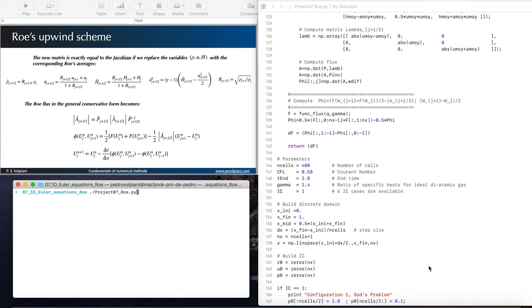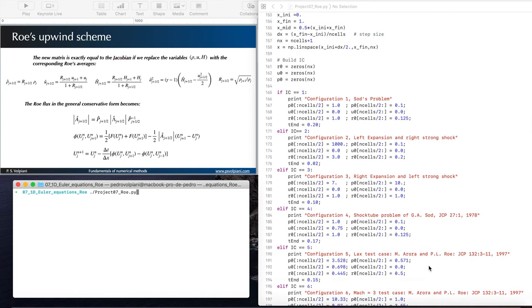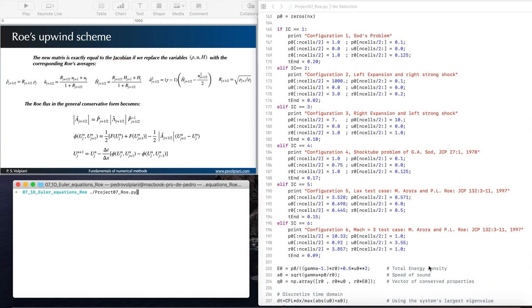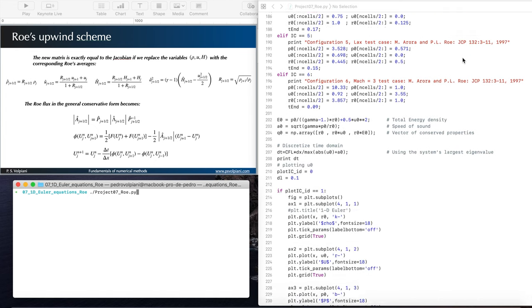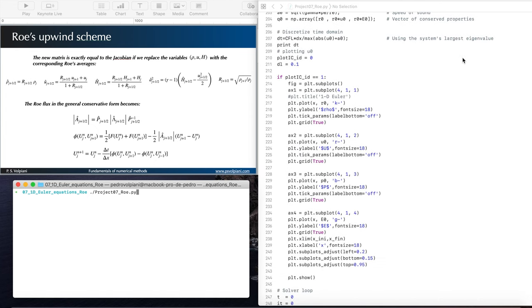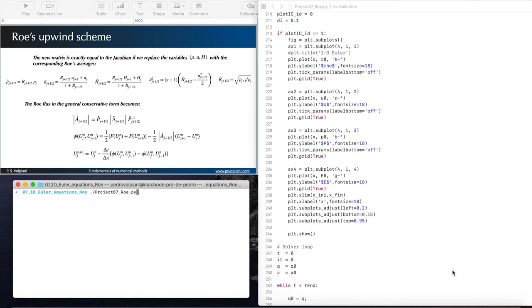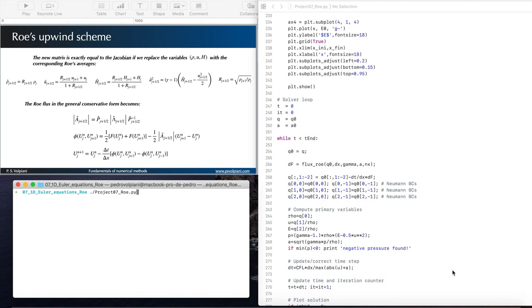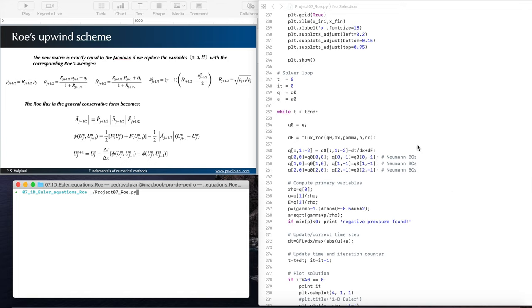We define some parameters. We define the initial conditions. Right now we're doing the configuration one. We're solving for the Sod's problem. We plot the initial solution if you want. And then here we solve the solution in time. So we solve this equation here, right here. Then we plot the solution.